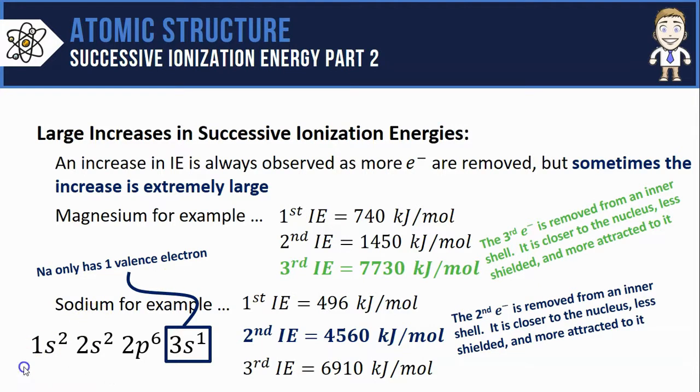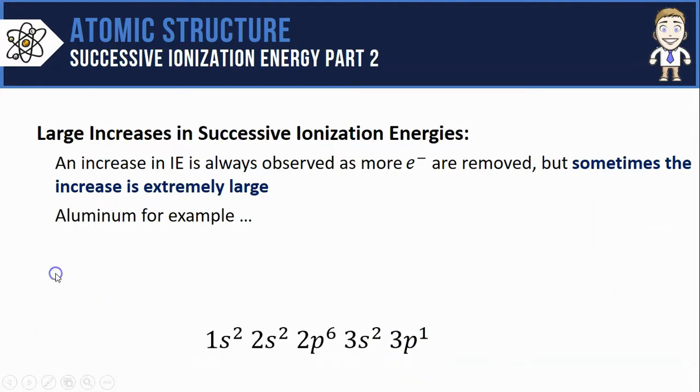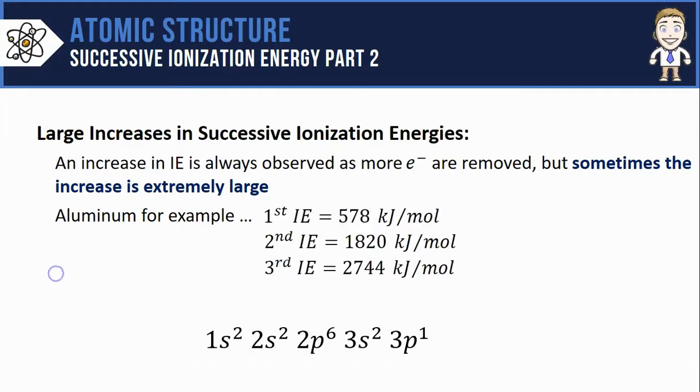To really make the point, let's also look at aluminum's electron configuration and its first three ionization energies. In these values for aluminum, there is no large increase in ionization energy at all, and that's because aluminum has three valence electrons that are all fairly easy to remove. So for aluminum, we would remove all those three and not get to a very large increase until the fourth electron removal.